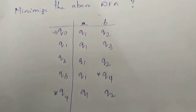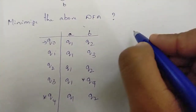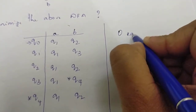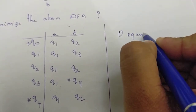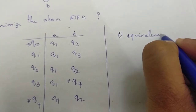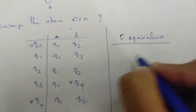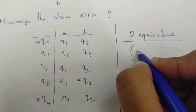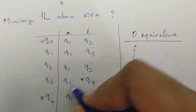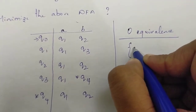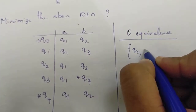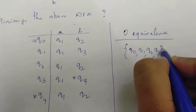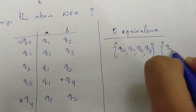Now we do zero equivalence. For zero equivalence, we separate the final state and non-final states into separate sets. Q4 is placed in the final state set. The rest — Q0, Q1, Q2, Q3 — form the non-final state set.